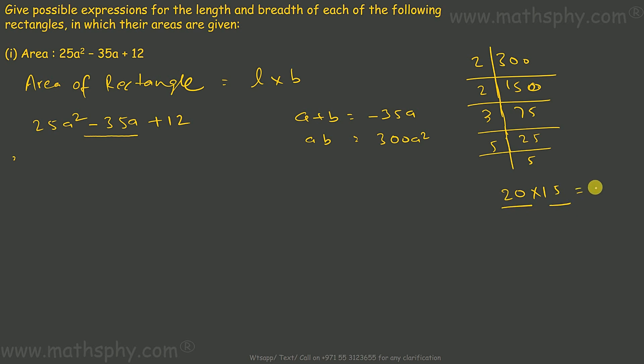20 into 15 gives you 300 and 20 plus 15 gives you 35. So if I write this as 25a squared minus 20a minus 15a plus 12, minus 20a minus 15a gives you negative 35a, minus 20a minus 15a multiplied together gives you 300a squared.